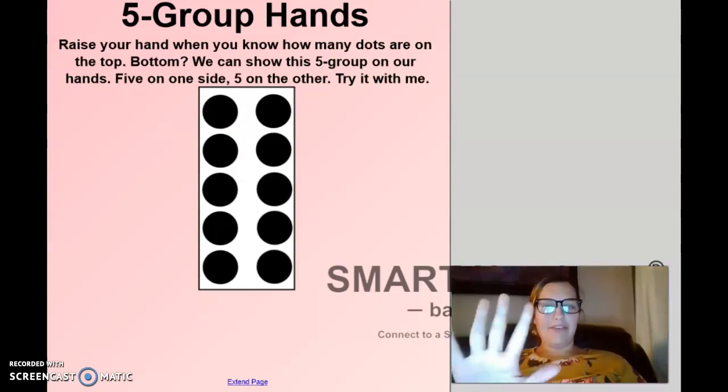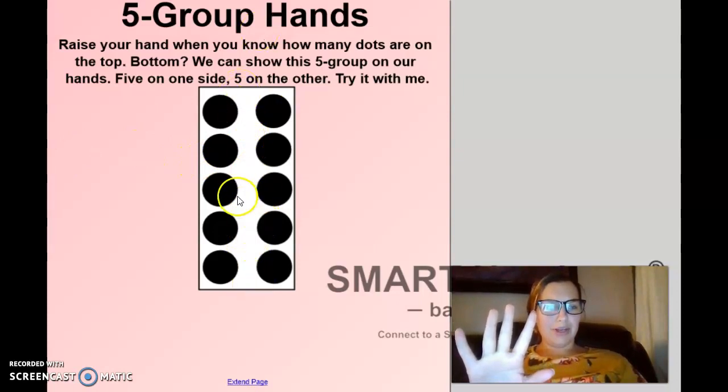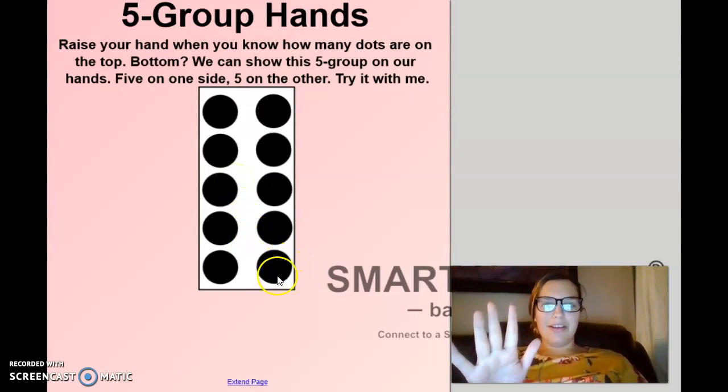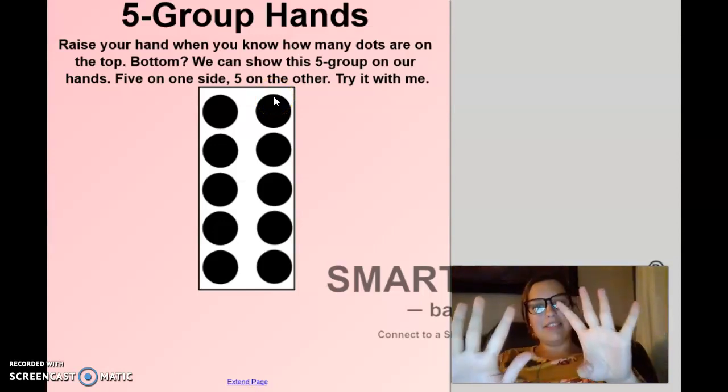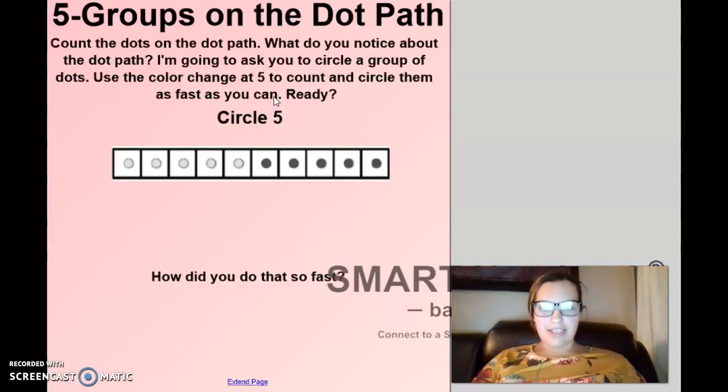Then we have five. And look at these groups look equal. How many do you think are on the other side? Five. Well, let's count to be sure. One, two, three, four, five. So, five, six, seven, eight, nine, ten. Nice job.